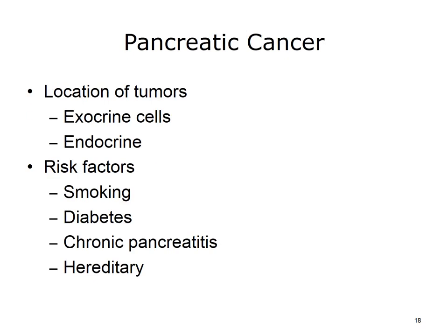Both the endocrine and exocrine cells in the pancreas can form tumors; however, tumors more commonly occur in the exocrine cells. These are referred to as adenocarcinomas, indicating the cancer has started in the gland. While some tumors are benign or non-cancerous, the majority are malignant or cancerous. Cancer of the pancreas is the fourth leading cause of cancer death in the U.S. Some risk factors for developing pancreatic cancer include smoking, long-term diabetes, chronic pancreatitis, and certain hereditary disorders.